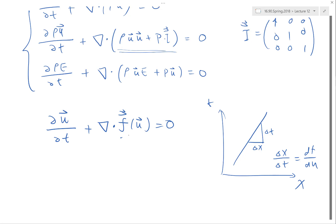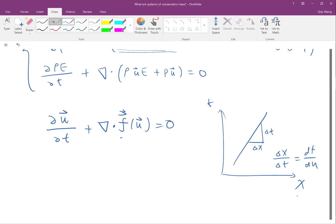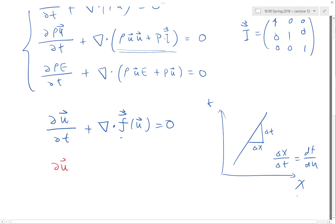Now our f is a tensor. Even in 1D, so even in a single spatial dimension, we have f being a vector function of the vector unknown.